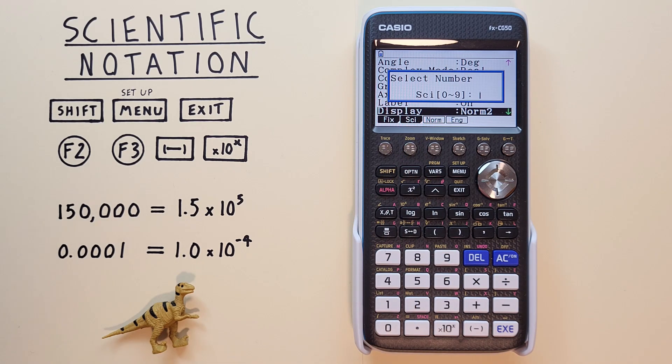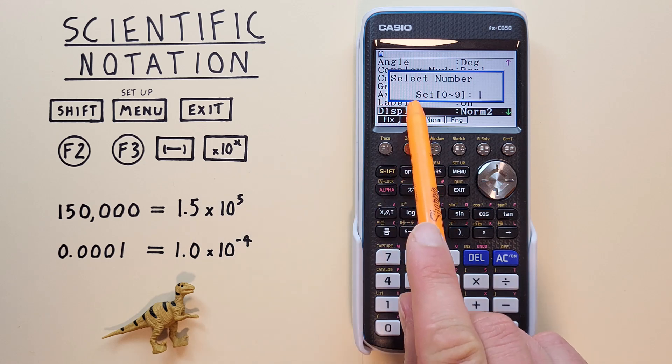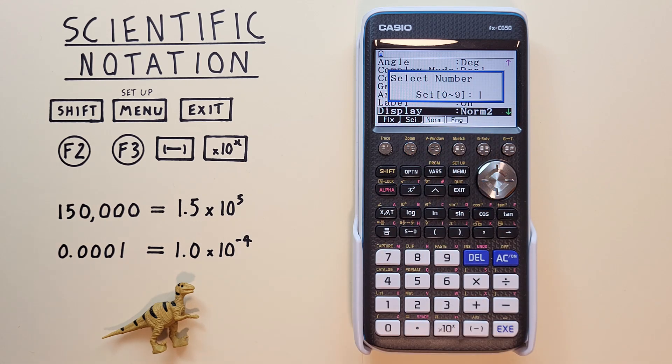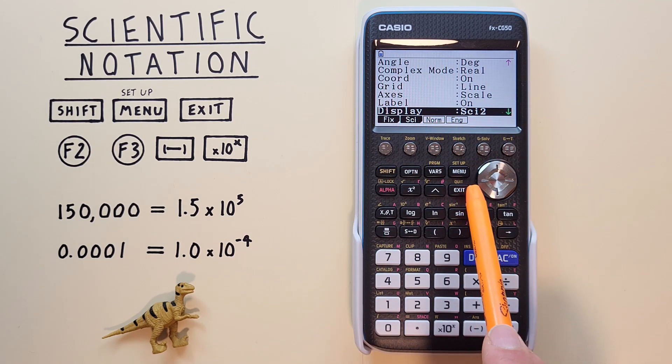It'll then ask us to select the number of displayed digits, between 0 and 9. Let's go with 2 and then hit EXE. When we're done, we can hit the Exit key.